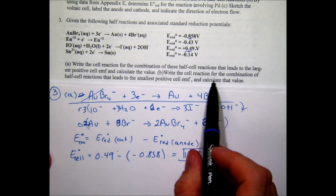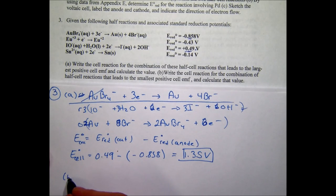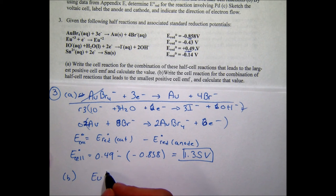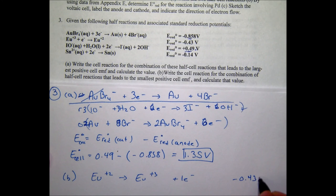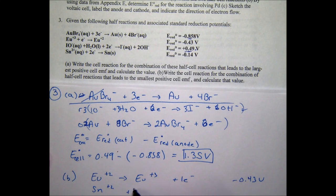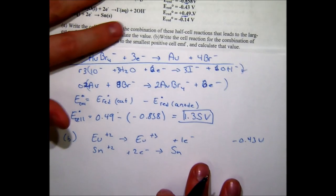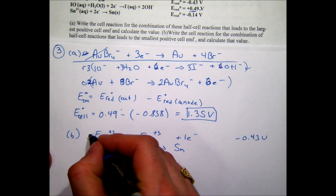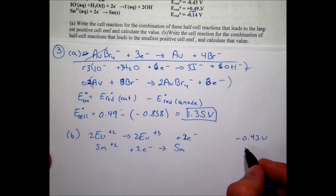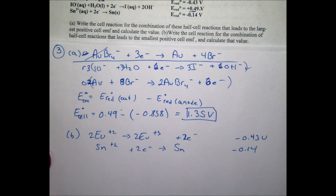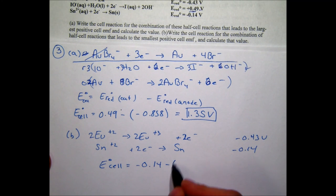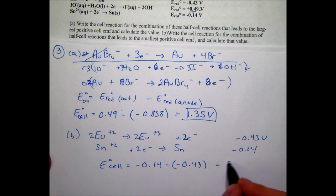For question (b), we find the combination giving the smallest positive EMF. We look at Eu²⁺ → Eu³⁺ + e⁻ at −0.43 V and Sn²⁺ + 2e⁻ → Sn at −0.14 V. We multiply the europium half reaction by 2 to balance electrons. E°cell = more positive − more negative = −0.14 − (−0.43) = 0.29 V. That's our smallest positive cell potential.